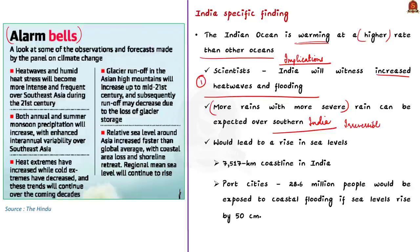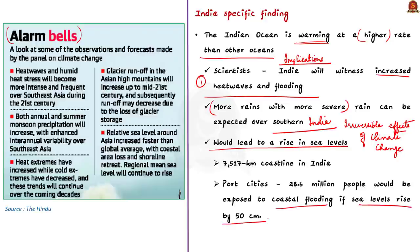The second implication of the warming of the Indian Ocean is that it would lead to a rise in sea levels, causing frequent and severe coastal flooding in low-lying areas in India. With a 7,517 kilometer coastline, India would face significant threats from rising seas. Across the port cities of Chennai, Kochi, Kolkata, Mumbai, Surat, and Visakhapatnam, 28.6 million people would be potentially exposed to coastal flooding if sea levels rise by 50 centimeters.